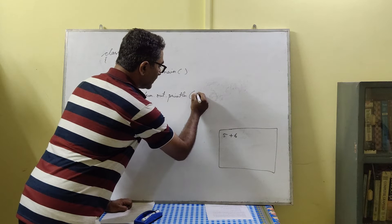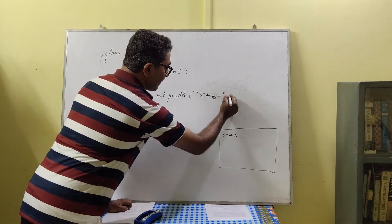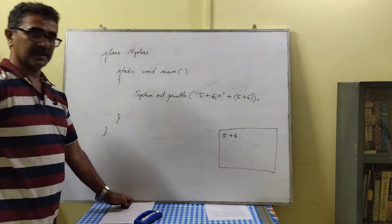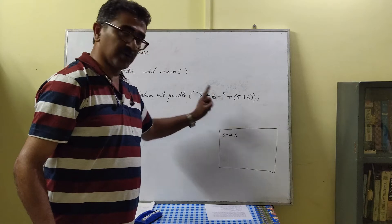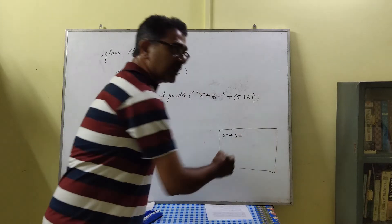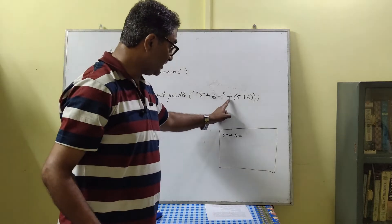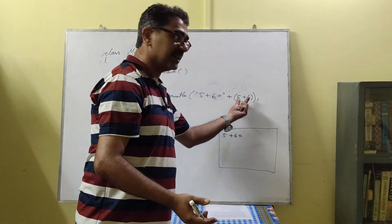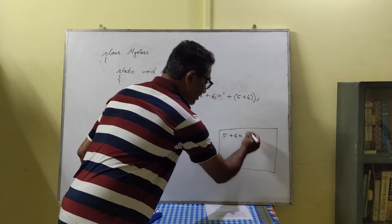We can modify this further. If we write '5 plus 6 equal to' within quotation marks, that part is displayed as-is. Then the plus outside the quotes means join — join with the sum of 5 and 6, which is 11. So the output will be: 5 plus 6 equal to 11.